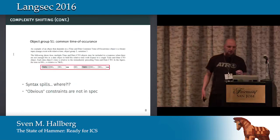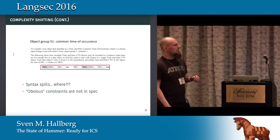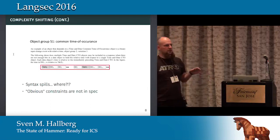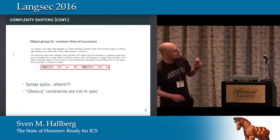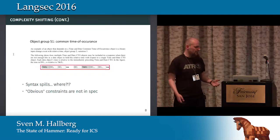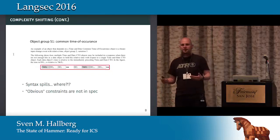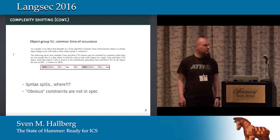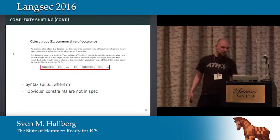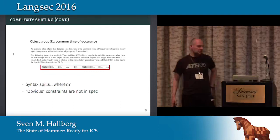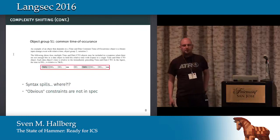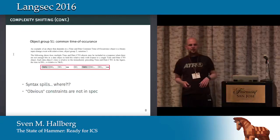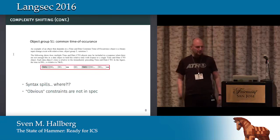Here's another example with a structure for timestamps on events. To save bits on the wire, they allow you to specify these relative to some common time of occurrence. There's an obvious constraint: if you don't have a common reference point, you can't have relative timestamps. But the spec never actually says this, and different implementations behave differently if this common time of occurrence object is left out of the packet. So you have instances where the complexity of the language is shifted into the prose description, and cases where it's simply not in the description anywhere.